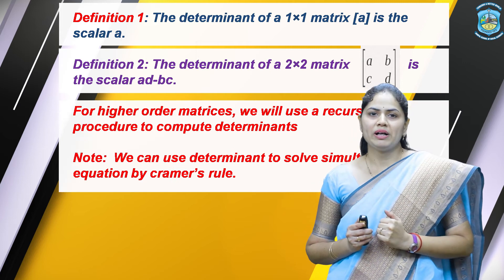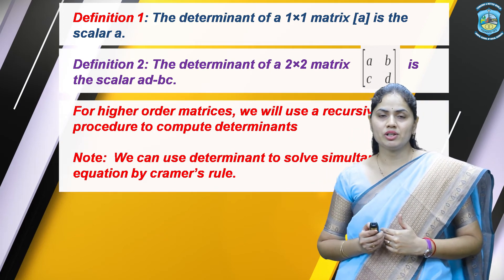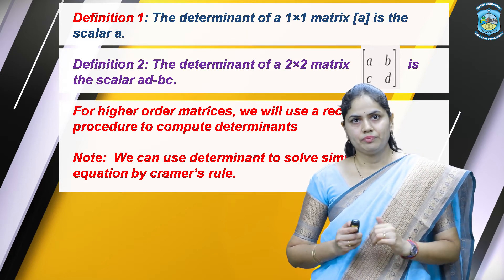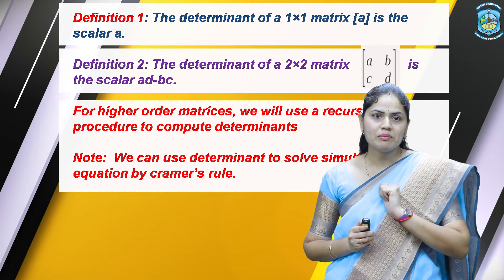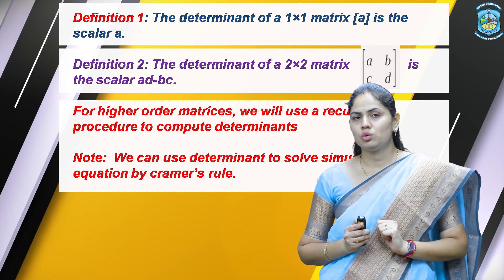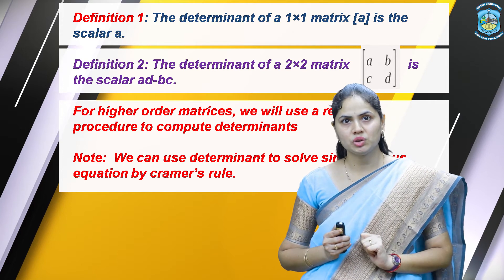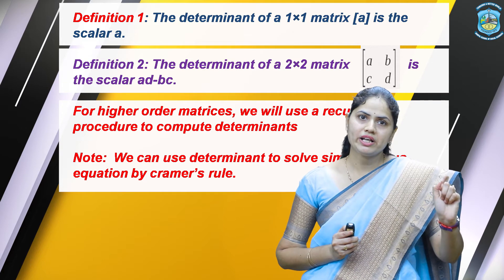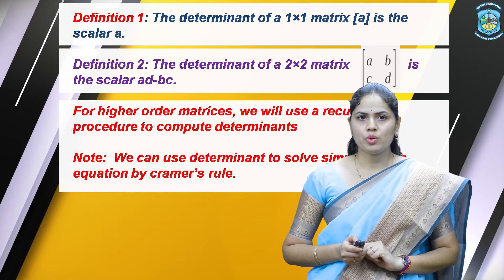For higher order matrices, we will use a recursive procedure to compute the determinant. The determinant is also used to solve simultaneous equations by Cramer's rule, which is also called the cross multiplication method in simultaneous equations.